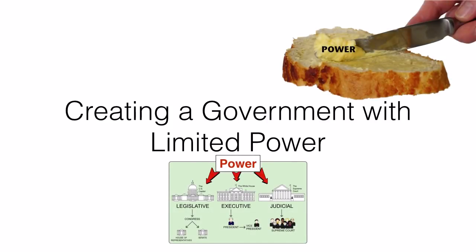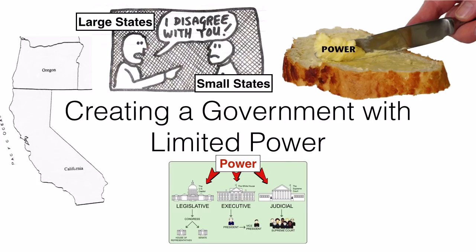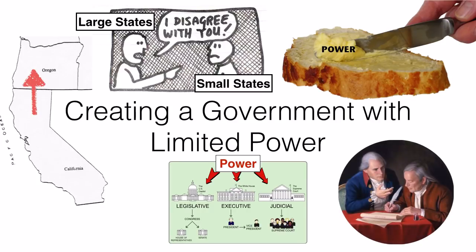Both groups wanted to create a government with limited power and came with some good ideas. Both plans spread power over three different groups so no one person or small group had all the power. But they had big disagreements. Should larger states have more power than small states? Should Oregon, with its 3 million voters, have the same power as California with its 18 million? This major disagreement seemed impossible to solve — until Roger Sherman and Oliver Ellsworth from Connecticut came up with the Great Compromise, taking ideas from both plans to create something all could agree to.